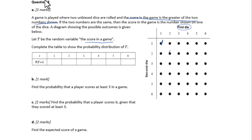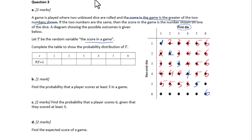We write down all the scores in the diagram. Along the diagonal where both dice show the same value, the scores are 1, 2, 3, 4, 5, 6. For cells where the second die is higher, the scores fill in as: 2, 3, 4, 5, 6; then 3, 4, 5, 6; then 4, 5, 6; then 5, 6; and finally all 6s. The entire grid has 36 possible outcomes.